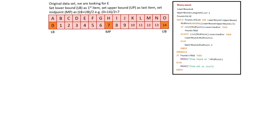Let's work through the algorithm now using a simple set of data. Follow along, pause the video if you need to, and make sure you understand what is happening to the data set at each stage and why. Here is our original data set — as you can see, it's all sorted and in order. The item we're looking for is E.